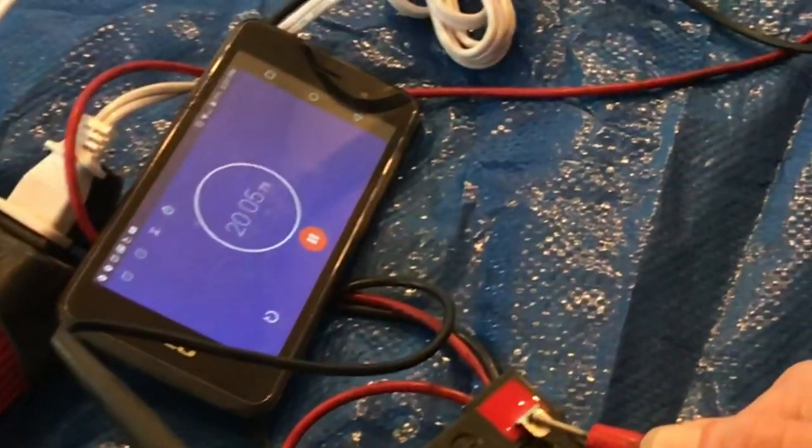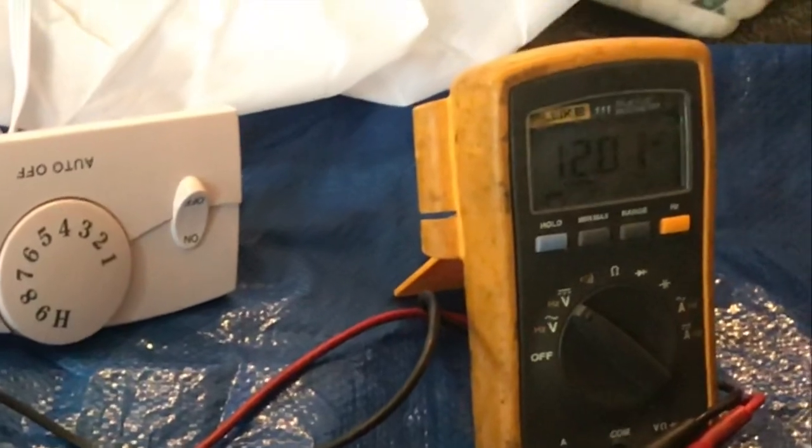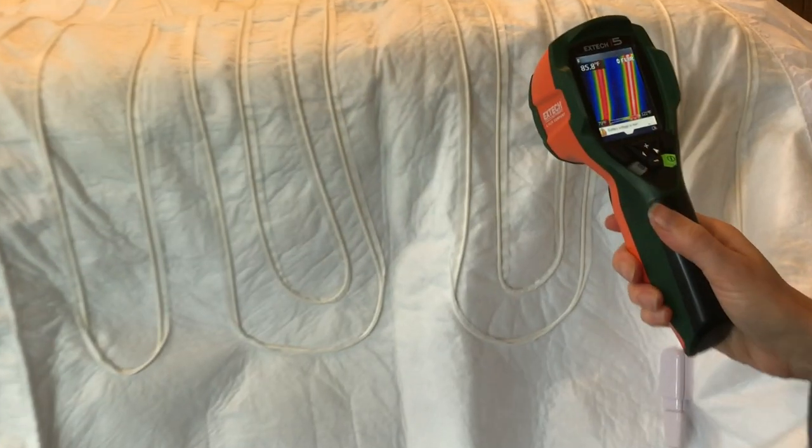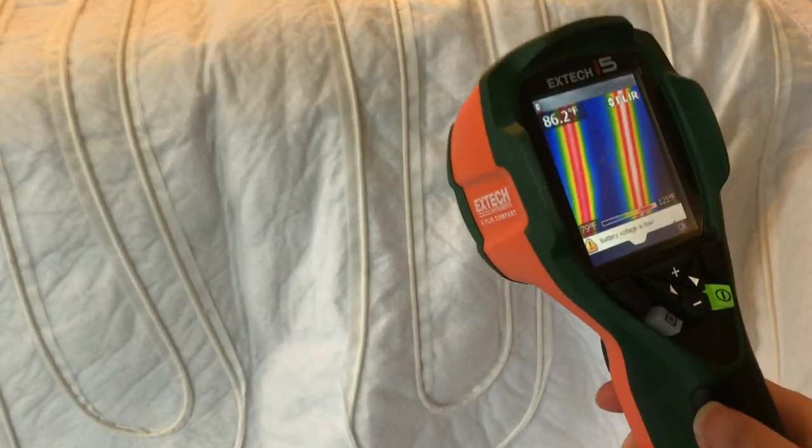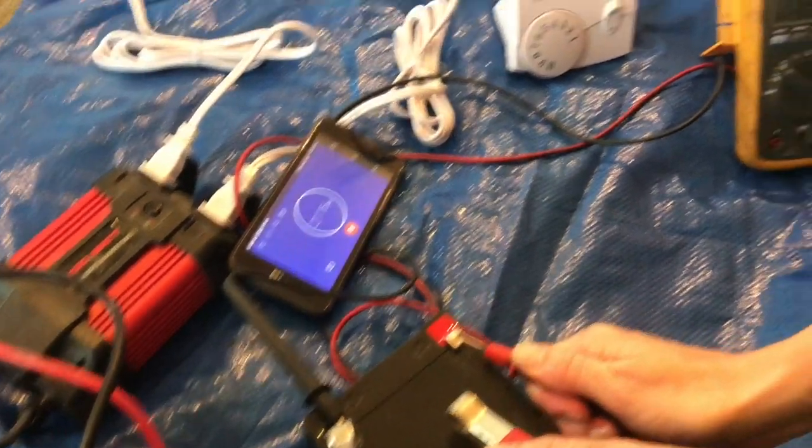Now at 20 minutes let's check the voltage. We're getting pretty close to that 12 volt threshold. Well let's keep this experiment going until the battery is a little bit below 12 volts. The temperature's still at about 90 degrees.